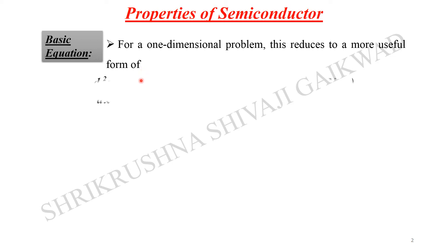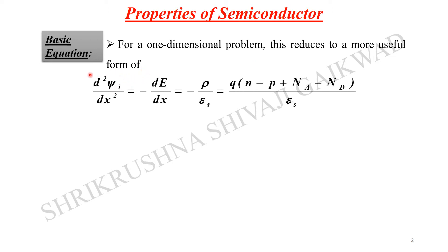For the one-dimensional problem, this equation reduces to a more useful form: d²ψ_i/dx² = −dE/dx = −rho/epsilon_s. Note that ψ_i here is not the wave function of the material; it is the electrostatic potential. We have simply replaced and rearranged the terms.